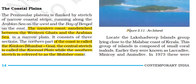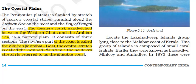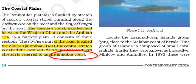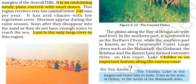Areas lying east and west of the Deccan Plateau have a narrow strip of coastal plains. The western coast is sandwiched between the Western Ghats and the Arabian Sea — a very narrow plain consisting of three sections: the northernmost Konkan Plain (Mumbai to Goa), the central Karnataka Plain, and the southern Malabar Coast, whose major portion lies in Kerala. The plains along the Bay of Bengal are wide and level. The northern part is called Northern Sirkars and the southern part is the Coromandel Coast. Large rivers such as Mahanadi, Godavari, Krishna and Kaveri form extensive deltas here. Lake Chilka is an important feature along the eastern coast and is the largest salt water lake in India.